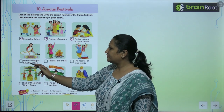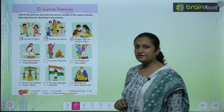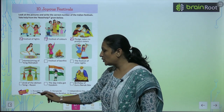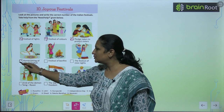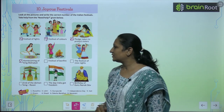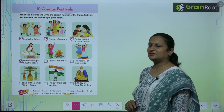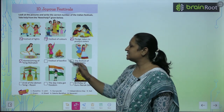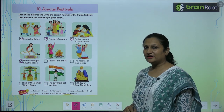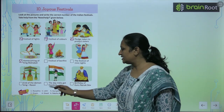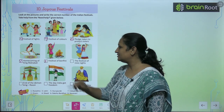Homecoming of king Mahabali. So ye festival jo hai? Onam. So you will write 2 here. Now ye dekho - ye hai Punjabi festival of bonfire. That is Lohri. So you will write 3 here.